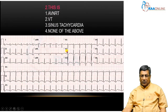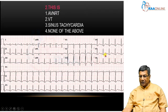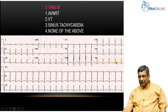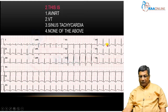Here we are given an ECG to diagnose tachycardia. The tachycardia shows a narrow QRS with a heart rate of more than 100 and a regular RR interval. You must check whether there is a P wave in front — and yes, there is a P wave in front.